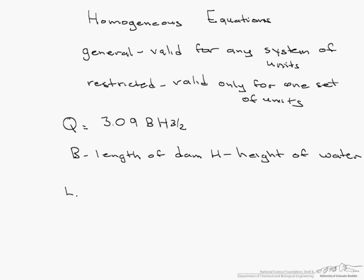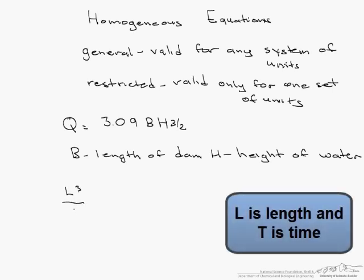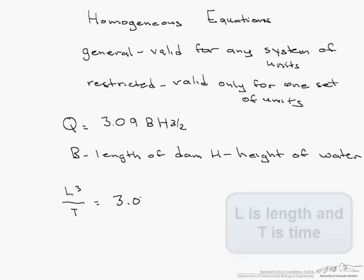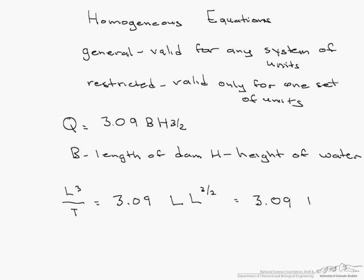Q volumetric flow rate is L³/T = 3.09 times b times h^(3/2), where b is length and h is length. This is the same as 3.09 L^(5/2).